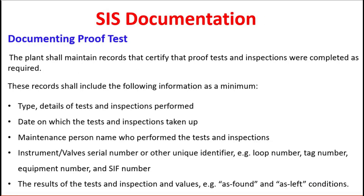The next item is proof test documentation, which is another critical and vital parameter for plant safety operation. The plant shall maintain records certifying that proof tests and inspections are completed as required. This is also part of audit requirements — whenever external third-party agencies like Bureau Veritas, TÜV, or other major international consultants visit the facility and conduct an audit, specific days may be dedicated exclusively to the safety instrumented system, and these records need to be shown during that time.